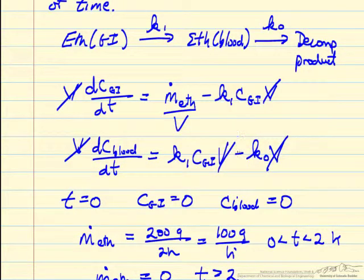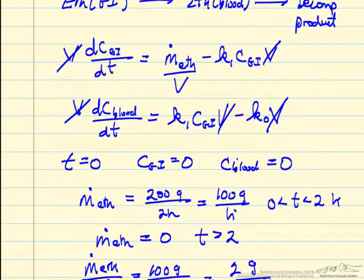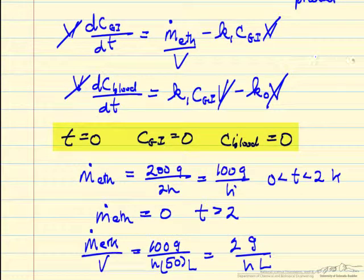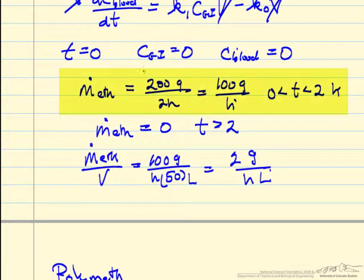This particular mass balance has initial conditions, and one slight difference from other problems is that the rate at which ethanol is being fed is only for the first two hours. Someone is consuming ethanol at a uniform rate for two hours and then they stop drinking.